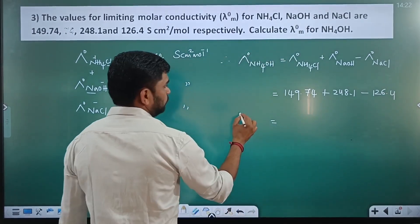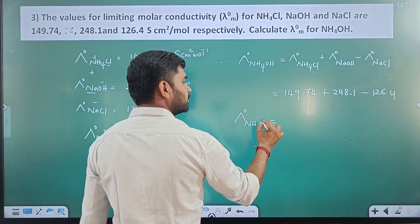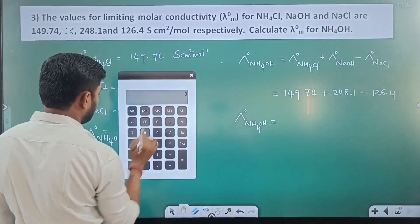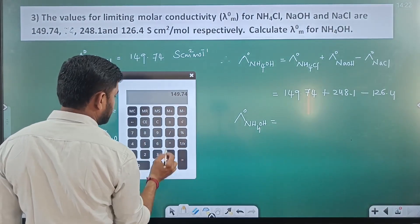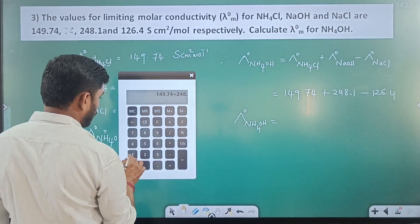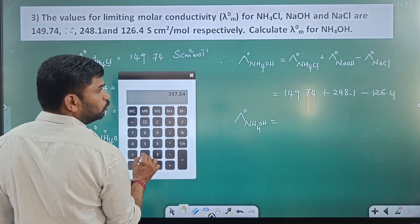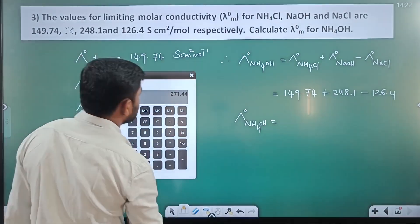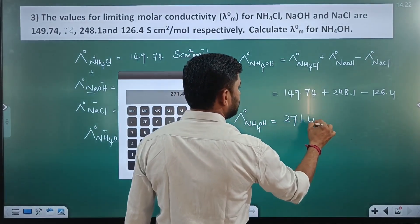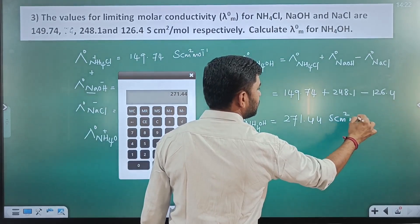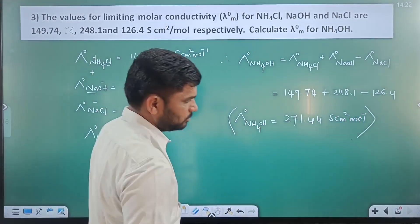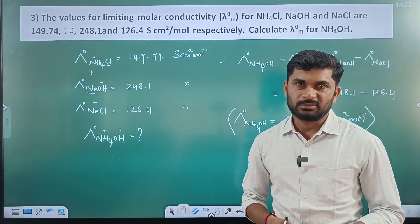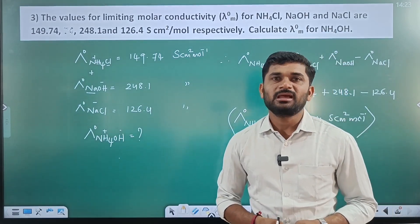Substituting the values: λ°m(NH₄OH) = 149.74 + 248.1 − 126.4 = 271.44 S·cm²/mol. So the final answer is 271.44 Siemens centimeter square per mole. These are some problems based on Kohlrausch's law, and this type of problem will definitely appear in your theory examination. For more such videos, please subscribe to my channel. Thank you.